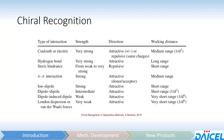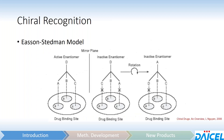Some combination of these — at least three or more — will hopefully provide an energy difference between the two enantiomers, thus resulting in a separation. The three-point interaction model is demonstrated well in the Easson-Stedman model, where you've got a drug binding site — or in our case, a chiral selector site — which can potentially form three interactions with each enantiomer.